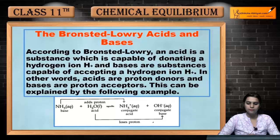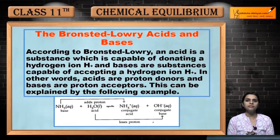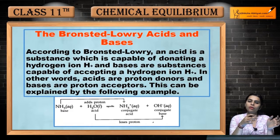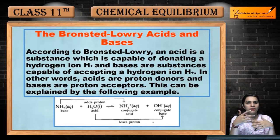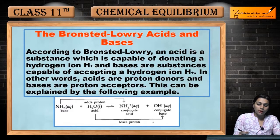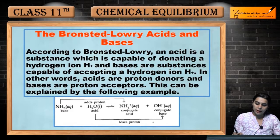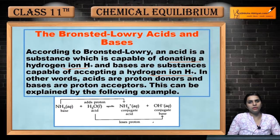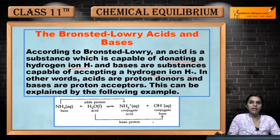The next theory given by another scientist was the Bronsted-Lowry acid-base theory. You have already seen the Arrhenius theory. According to Bronsted-Lowry theory, an acid is a substance which is capable of donating a hydrogen ion — that is, H-positive ion — and a base is a substance capable of accepting a hydrogen ion, that is H-positive ion.